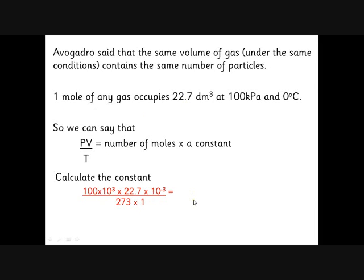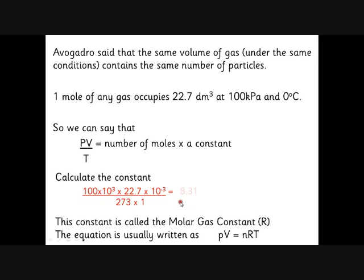That gives us a number, and that number is 8.31. It's got some slightly strange units: joules per kelvin per mole. We're not going to talk about these too much, but hopefully you can see it's per kelvin because we've got a temperature on the bottom here, it's per mole because this is for one mole, and the joules comes from pressure times volume. If you might have a little think about how pressure times volume becomes joules, I'm not going to go into that here. This is called the molar gas constant, capital R.